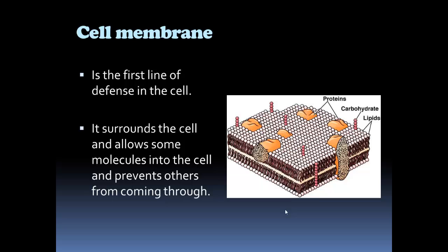The cell membrane is like the security of a household, or the police officers in a school, or even the fence line around the school. It is the first defense for the cell. The cell membrane is the protectant — it surrounds the cell, allows good molecules to come in and out, pushes out the bad, and prevents unwanted molecules from getting into the cell.